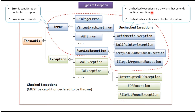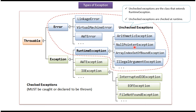Unchecked exceptions are the classes that extend runtime exception. Examples of unchecked exceptions are arithmetic exception, null pointer exception, array index out of bounds exception, illegal argument exception, etc. These classes extend runtime exception. Unchecked exceptions are checked at runtime.